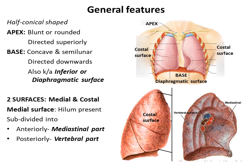The costal surface is large, convex and smooth. It is related to the thoracic wall and bears the impressions of the overlying ribs or costa, hence called the costal surface.